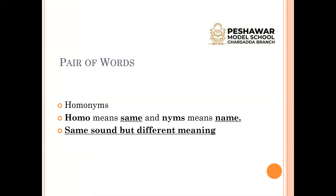Do you know what a pair is? Joda, jaise kehte hain na? Just like we have a pair of socks, pair of shoes — when we have two things, that is called a pair. Now, what are pair of words? The first point is, they are homonyms. Homo means same and nyms means name — those words which have the same sounds but are different in spellings and different in meaning. Pronunciation dono ki same hoti hai, but spelling aur meaning different hoti hai.